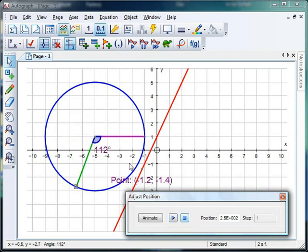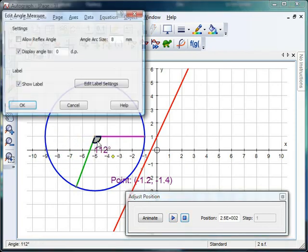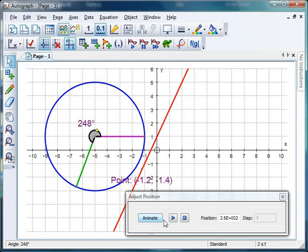Oh, what's gone on there? It's measuring the wrong angle again. Double click on that. Allow reflex angle, please. Click OK, click play, and there we're good to go.